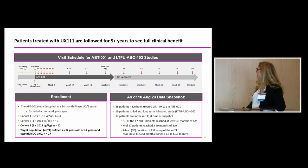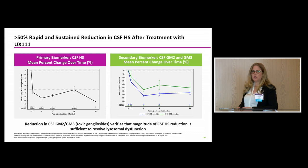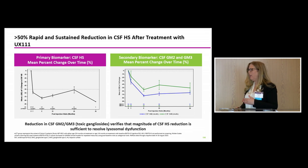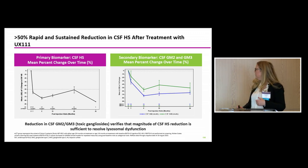We see a rapid reduction in CSF HS within the first month post-administration, with a further nadir at six months and an overall reduction of greater than 50 percent. Looking at secondary biomarkers, the threshold of CSF HS reduction we've achieved appears adequate — we're starting to see secondary storage markers come down as well, specifically GM2 and GM3. This is sufficient to say we are restoring lysosomal function, and we have had target engagement in the brain because CSF gangliosides are also coming down.